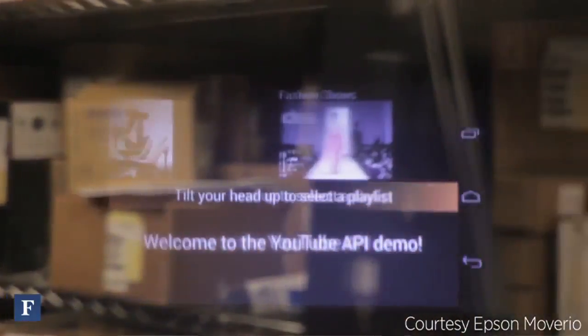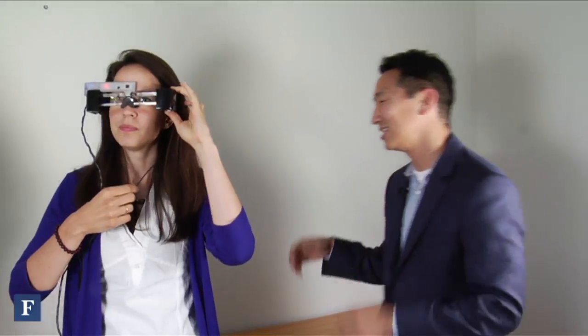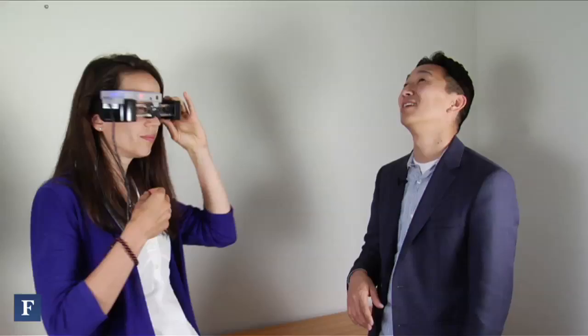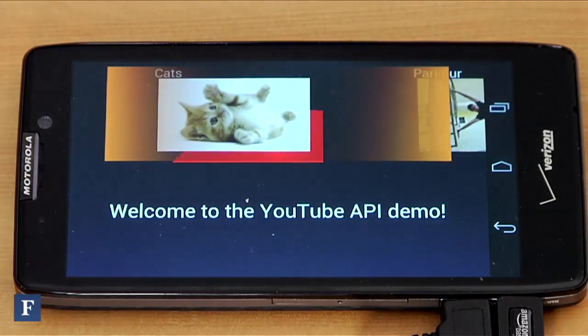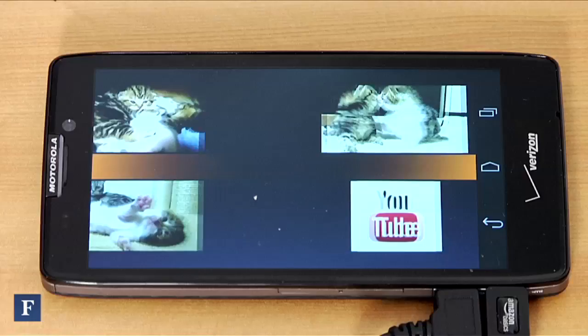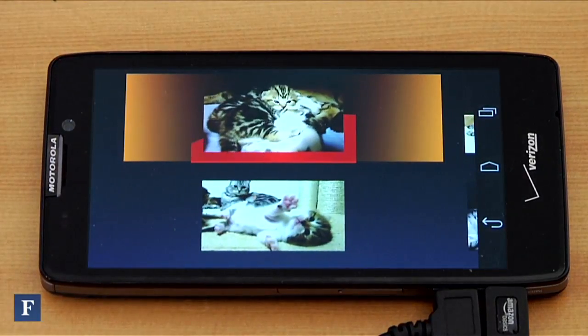What you're going to see is a 360-degree video wall, all different categories that you can select from YouTube, and if you look up, you can actually select one of those categories. I'm selecting cats. And if you gaze at one of the videos, you can go ahead and initiate a playback.